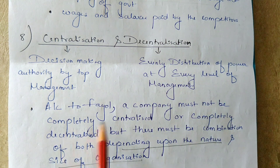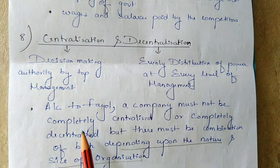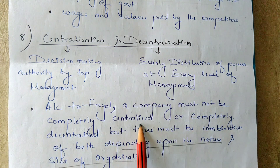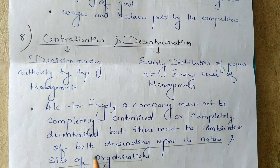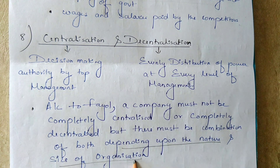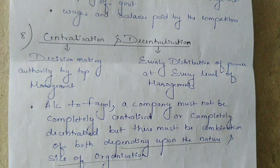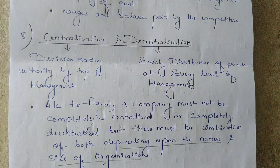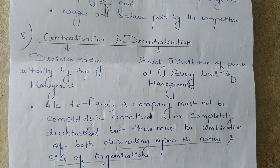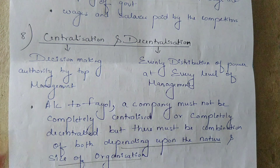According to Fayol, a company must not be completely centralized or completely decentralized, but there must be a combination of both depending upon the nature and size of the organization. In small organizations where there are fewer employees, all decisions relating to business activities will be taken by top management.